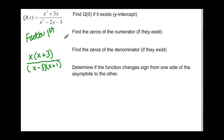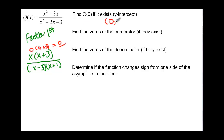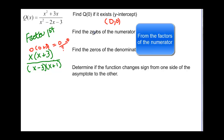So if we let x equal zero, we let this be zero and (0 + 3) and multiply, that's going to give me zero on top. Zero divided by anything is just going to be zero. So we have a y-intercept at (0, 0). Zero divided by anything is zero. Now we want to find the zeros of the numerator.